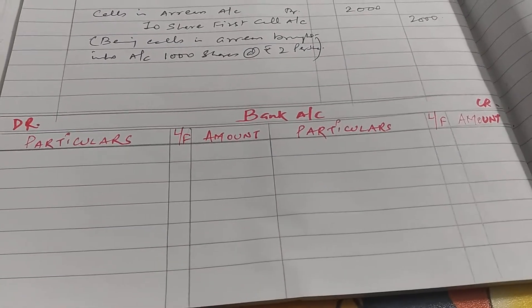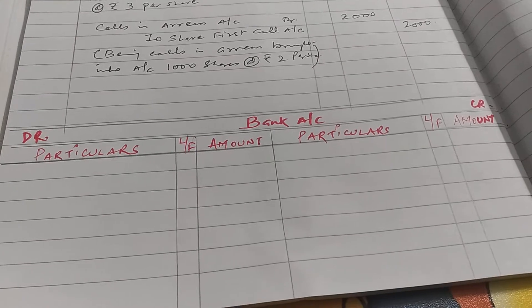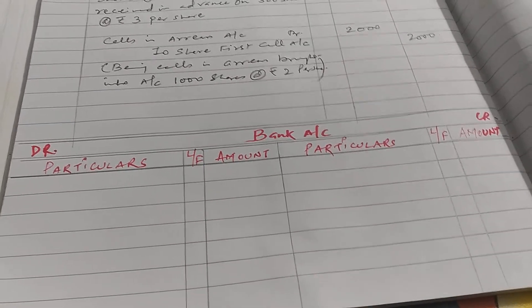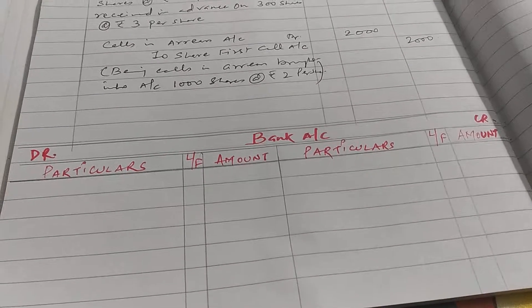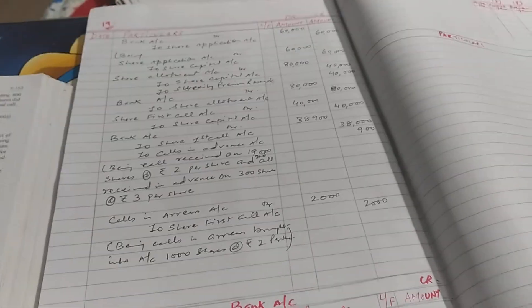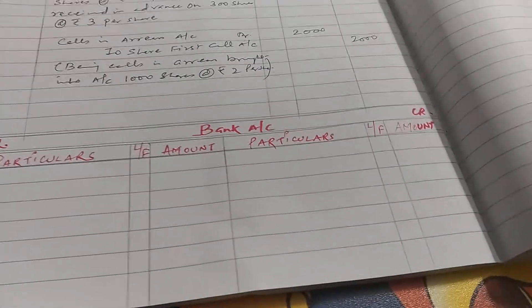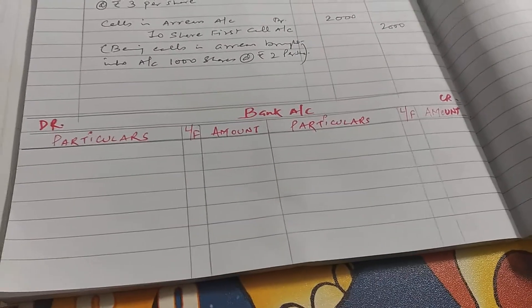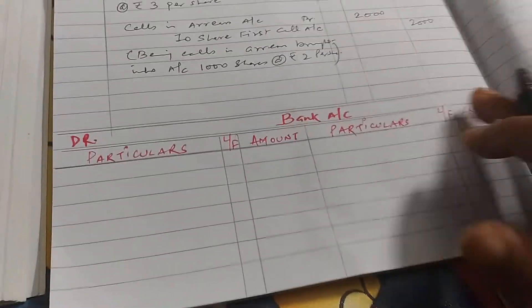Welcome to your accountancy class. This is the continuation of our previous video. In our previous video we have done journal entry of sum number 19. Now we will make bank account.